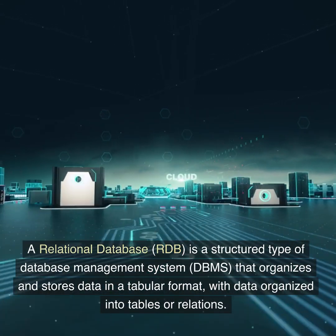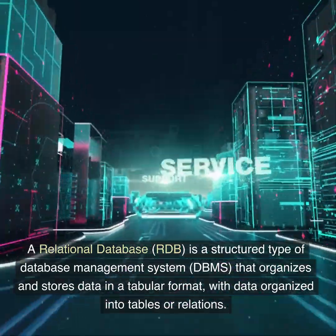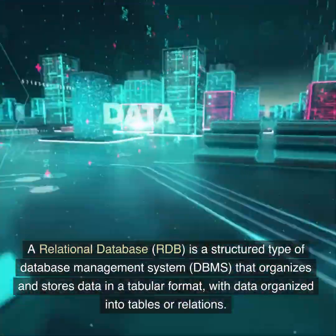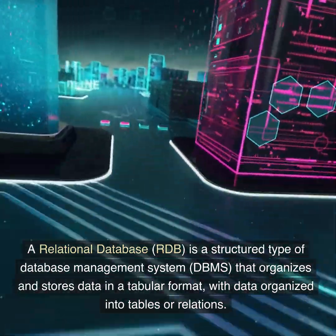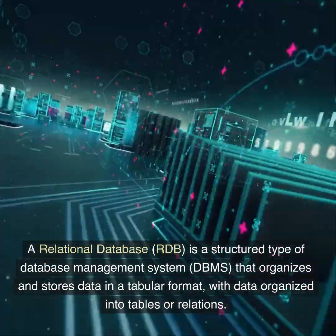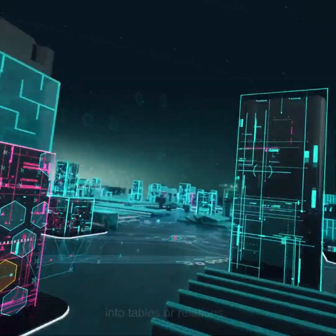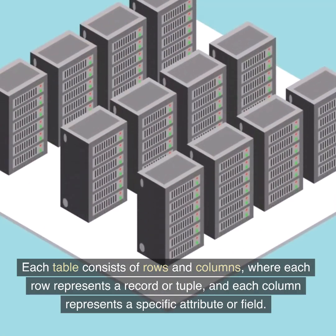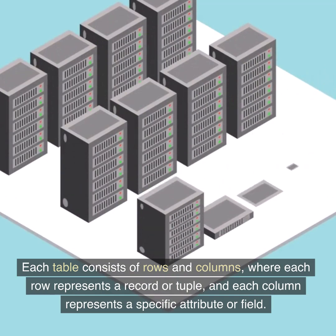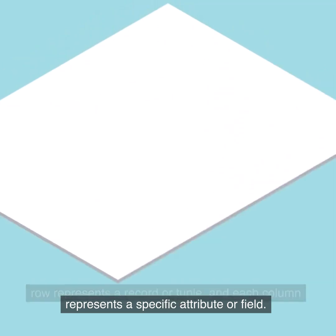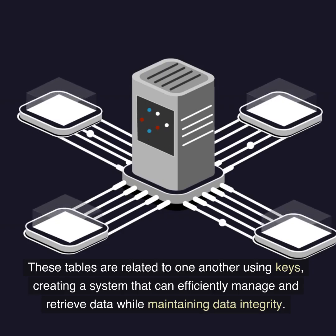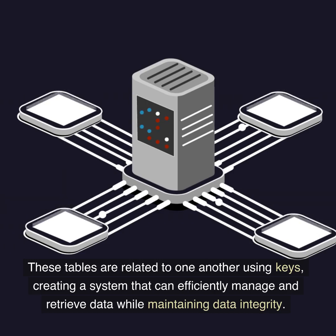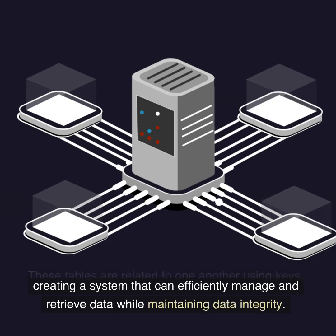A relational database, RDB, is a structured type of database management system, DBMS, that organizes and stores data in a tabular format, with data organized into tables or relations. Each table consists of rows and columns, where each row represents a record or tuple, and each column represents a specific attribute or field. These tables are related to one another using keys, creating a system that can efficiently manage and retrieve data while maintaining data integrity.